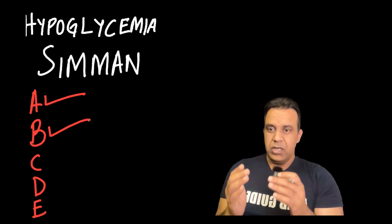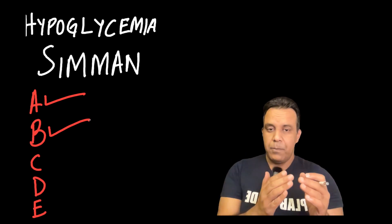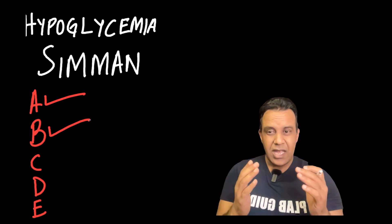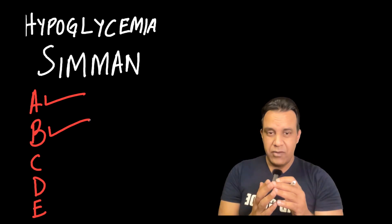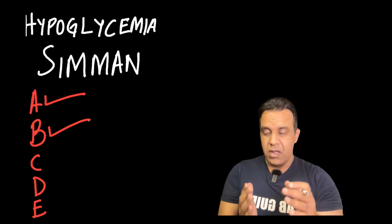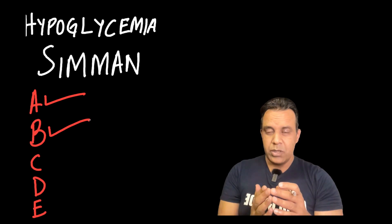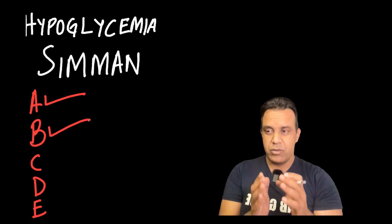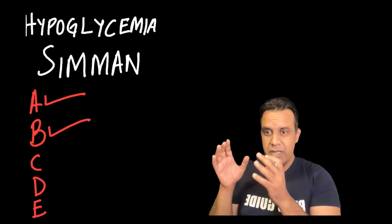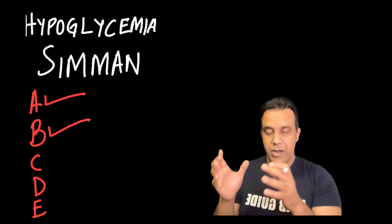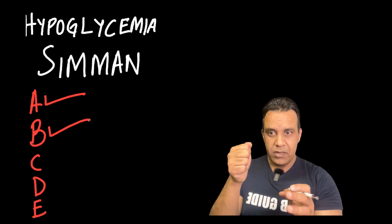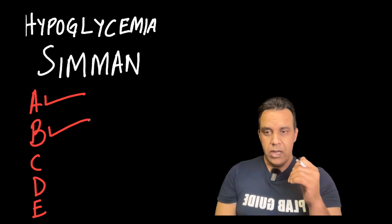Whatever the glucose reading is, act accordingly. If the patient has an IV line, use it to administer 20% dextrose or 10% dextrose, whichever is available. Go to the trolley, pick it up, bring it to the patient, and hang it on the drip stand.